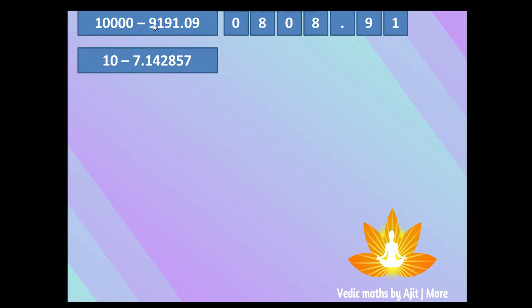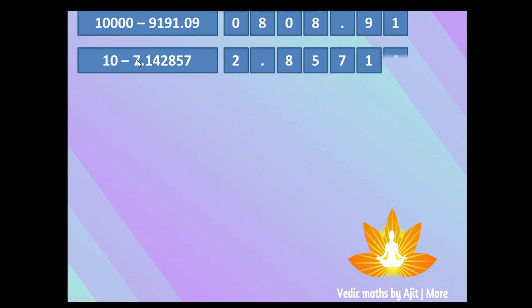Example: 10 minus 7.1428577. This works for whole numbers as well. 9−7=2, dot as-is, 9−1=8, 9−4=5, 9−2=7, 9−8=1, 9−5=4, 9−7=2, 10−7=3. The complement is 2.8571423. If you add this complement and the original number you get the base.